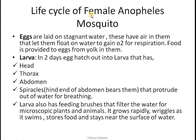Before we get to control and prevention, we need to know the life cycle of the vector — the female Anopheles mosquito. Understanding its life cycle helps us find preventive measures to control malaria. Like any other mosquito, eggs are laid on stagnant water. The eggs have air in them which lets them float to gain oxygen for respiration, and food is stored in them in the form of yolk.